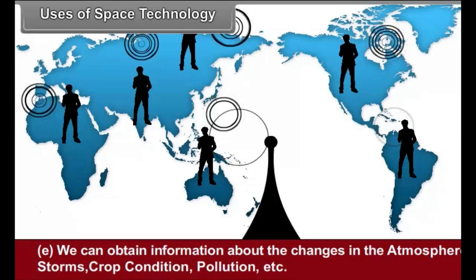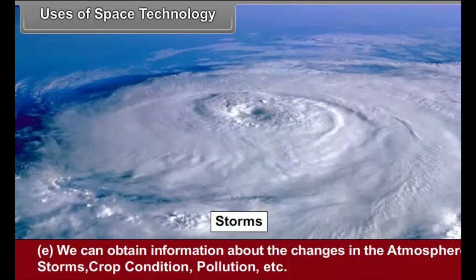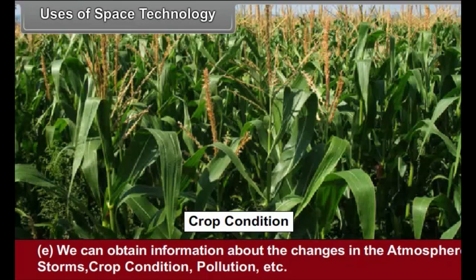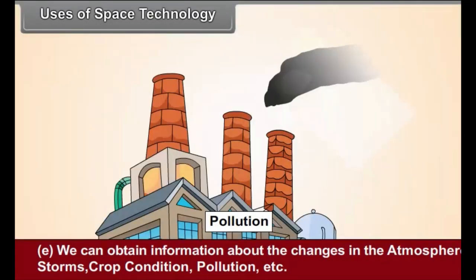D. We can contact persons who are thousands of kilometers away using telephones or mobile phones. E. We can obtain information about the changes in the atmosphere, storms, crop conditions, reservoirs, pollution, etc.